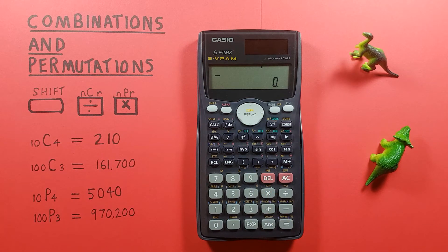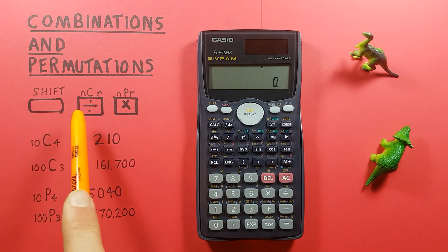To start off, if we want to find combinations, which are when you choose a certain number of objects from a larger set and the order does not matter, we use the shift function of the division.